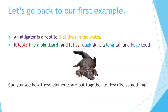Let's go back to our first example. An alligator is a reptile that lives in the water. It looks like a big lizard, and it has rough skin, a long tail, and huge teeth. Can you see how these elements are put together to describe something?